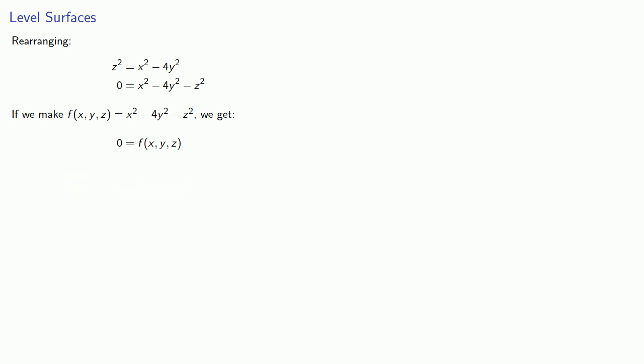And what this means is that the surface z squared equals x squared minus 4y squared is a level curve, well actually now it's a surface, a level surface of our function of three variables. And specifically, it's a level surface where our function of three variables is equal to 0.